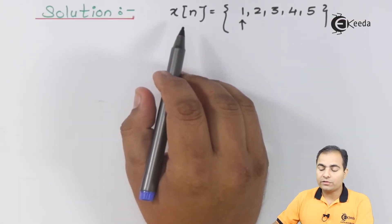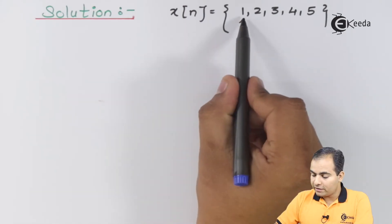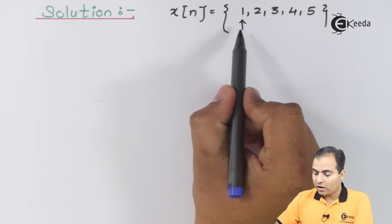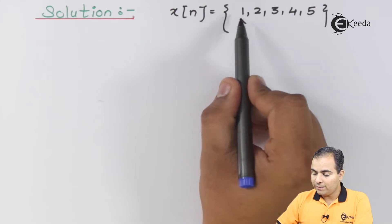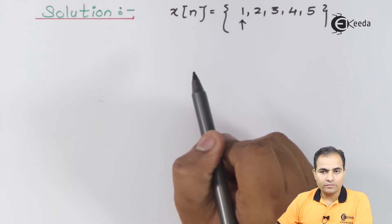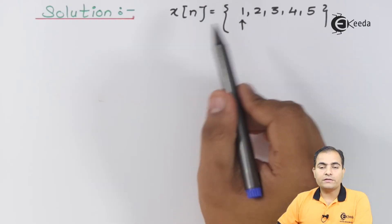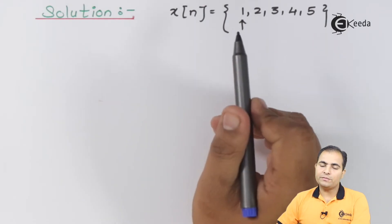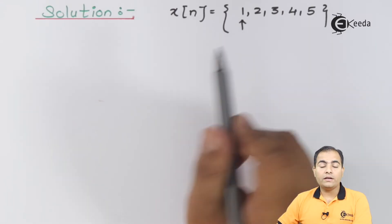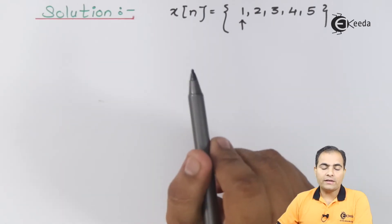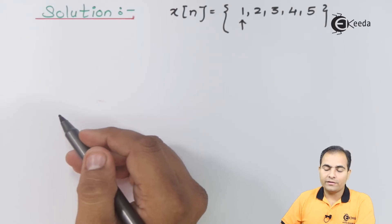The sample x[n] = {1, 2, 3, 4, 5} has its origin at the first value. If the arrow is marked under any sample value, that sample gives us the origin location. All samples here are on the right-hand side, meaning we have positive instances. Now we are going to apply the Z-transform according to its definition.